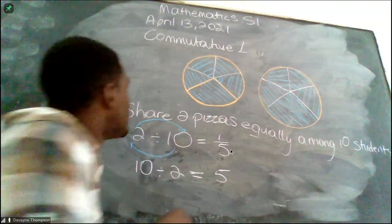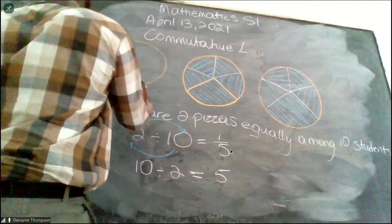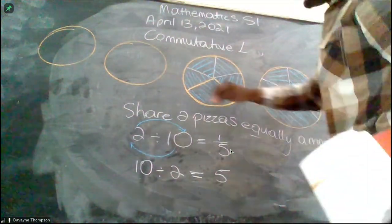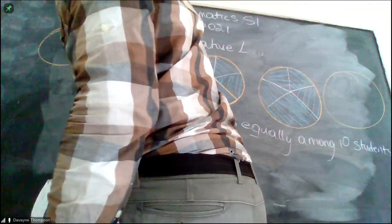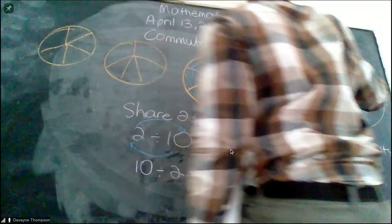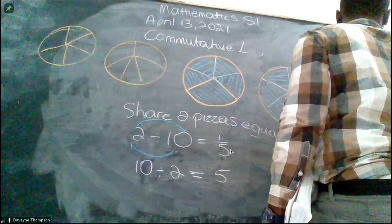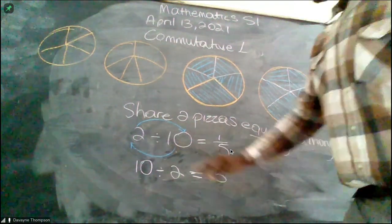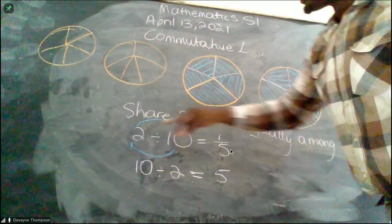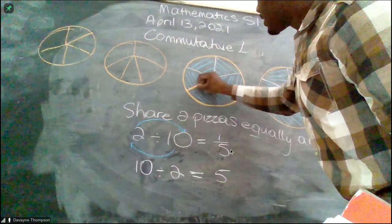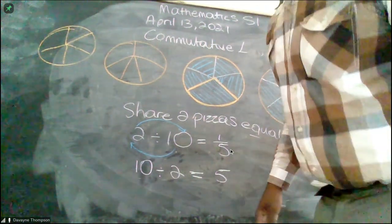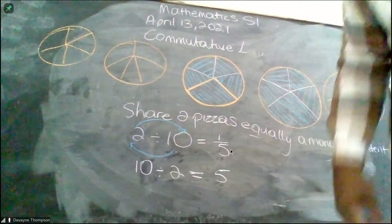We're going to draw one more pizza right here, and one more pizza right here, and one more pizza right here. These pizzas would go to that one person if we were to share it as ten divided by two. Ten divided by two would mean one person gets five pizzas, versus two divided by ten would be one person gets one-fifth of one pizza.